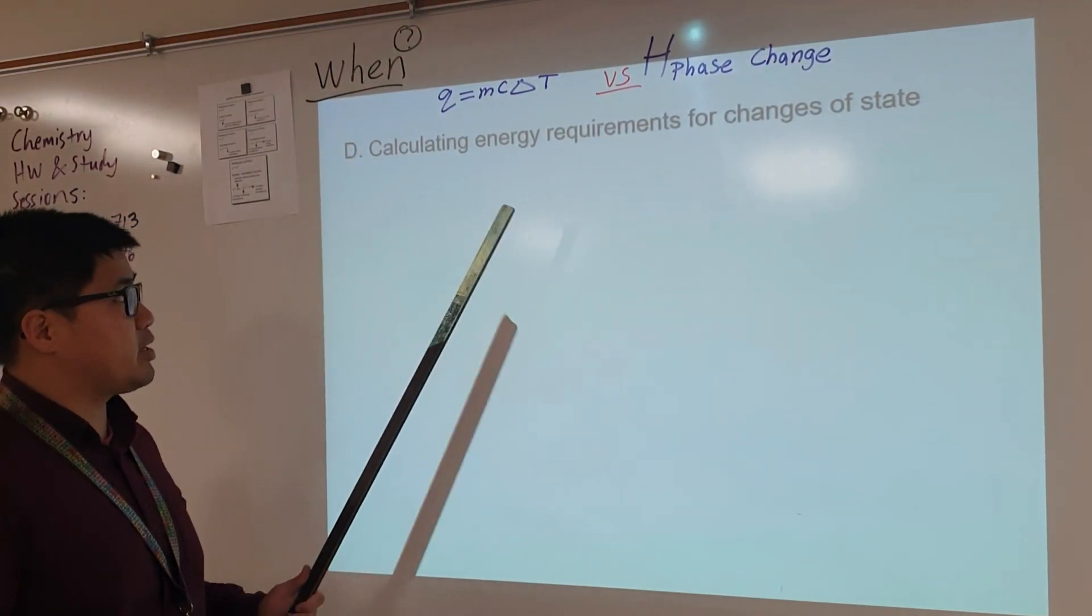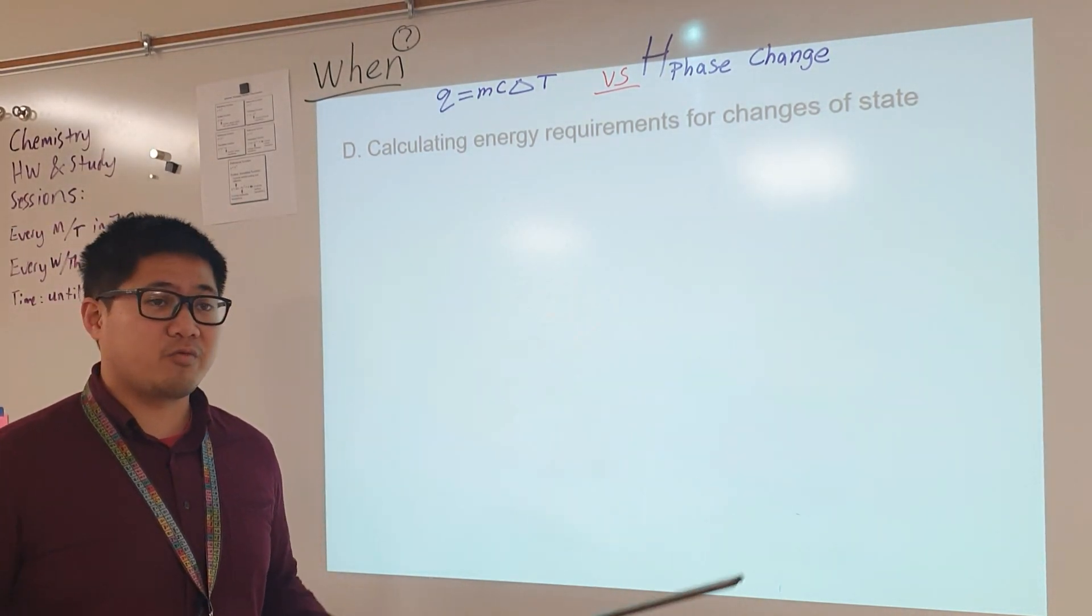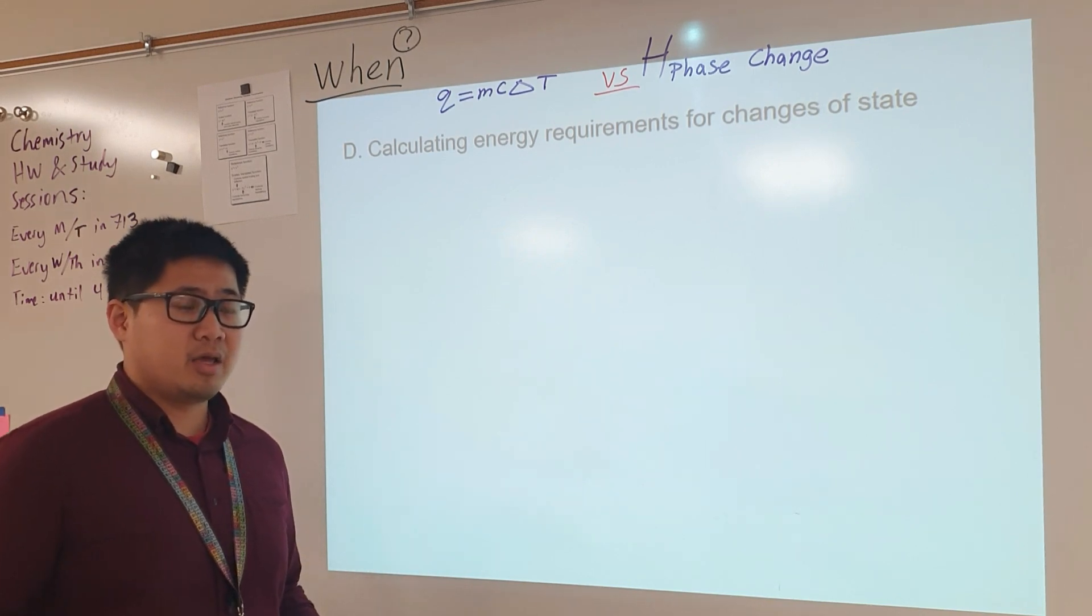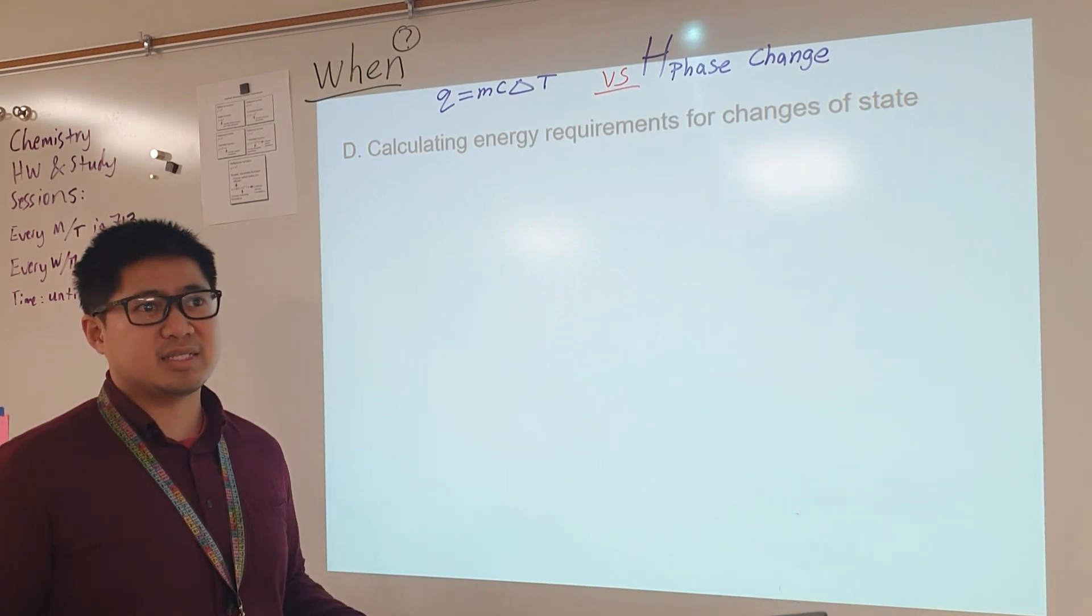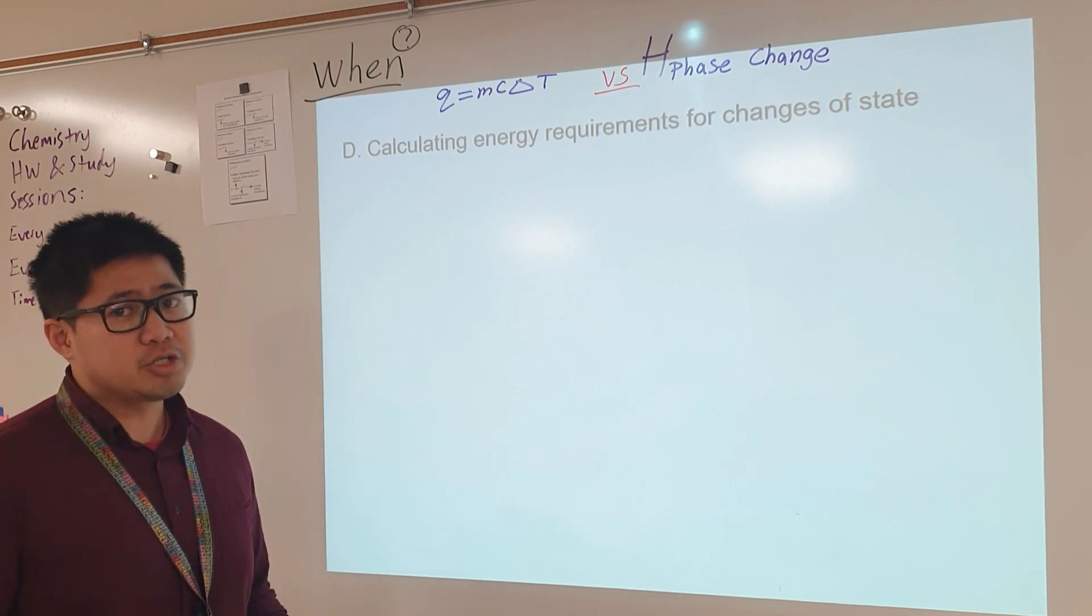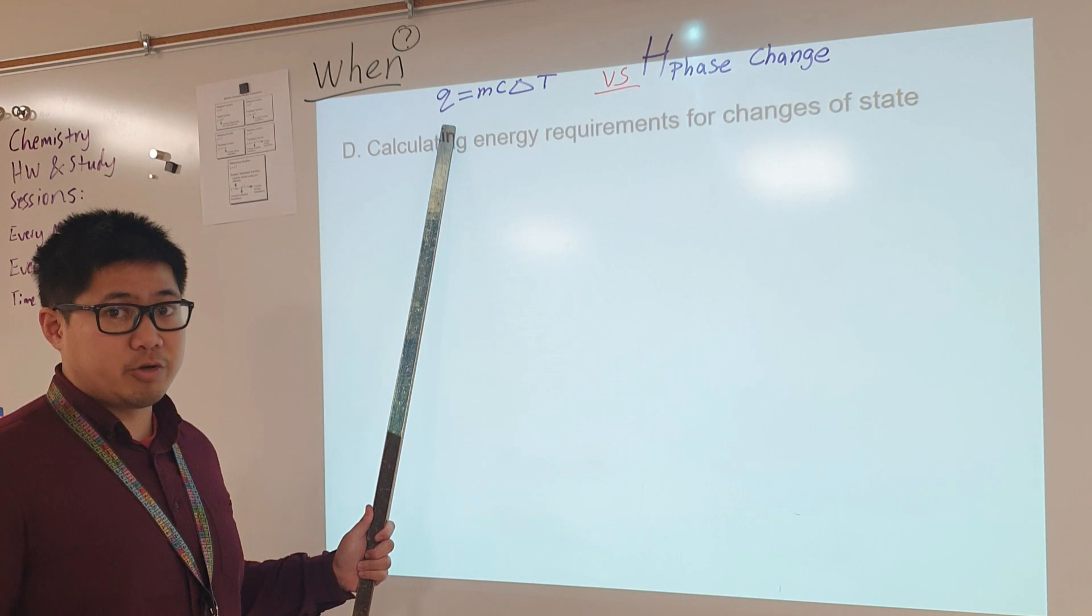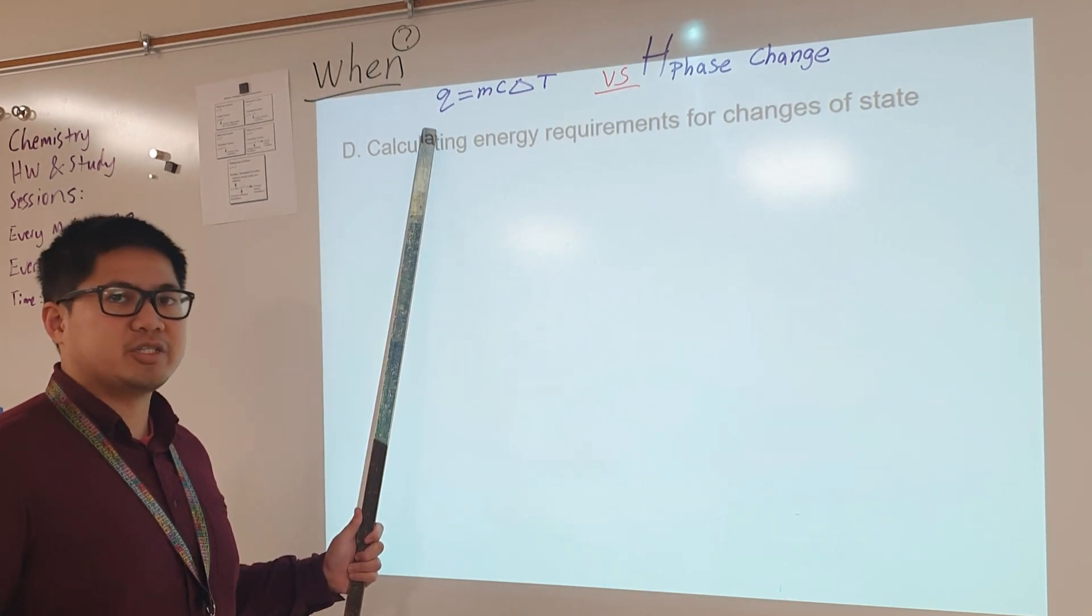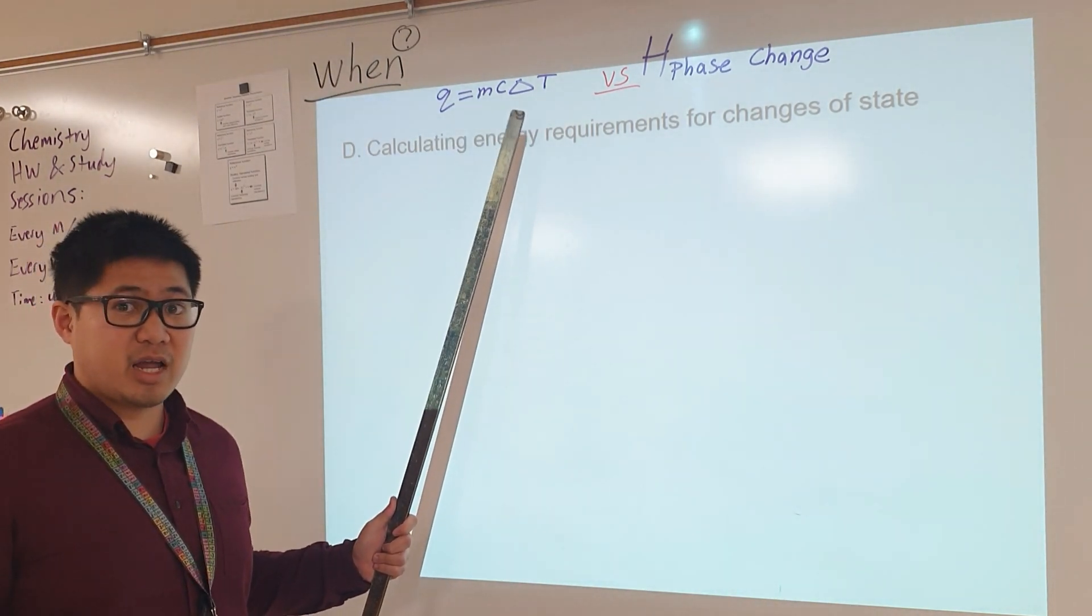When it comes to calculating energy requirements for changes of states, as you've seen since last week, we've lit a blowtorch to a block of ice. When we lit this blowtorch onto the ice, you see that the temperature didn't really change that much. Usually you're used to using Q equals MC delta T, or Q equals MCAT. But when there's no change in temperature, what would delta T be? Delta T would be zero.